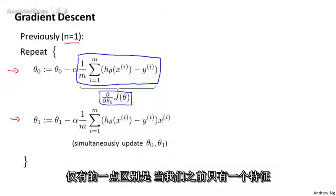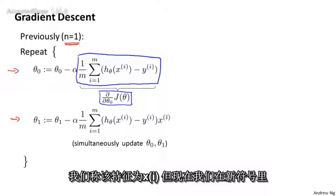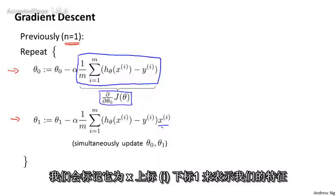There's one little difference, which is that when we previously had only one feature, we would call that feature xi. But now, in our new notation, we would, of course, call this x superscript i subscript 1 to denote our one feature.